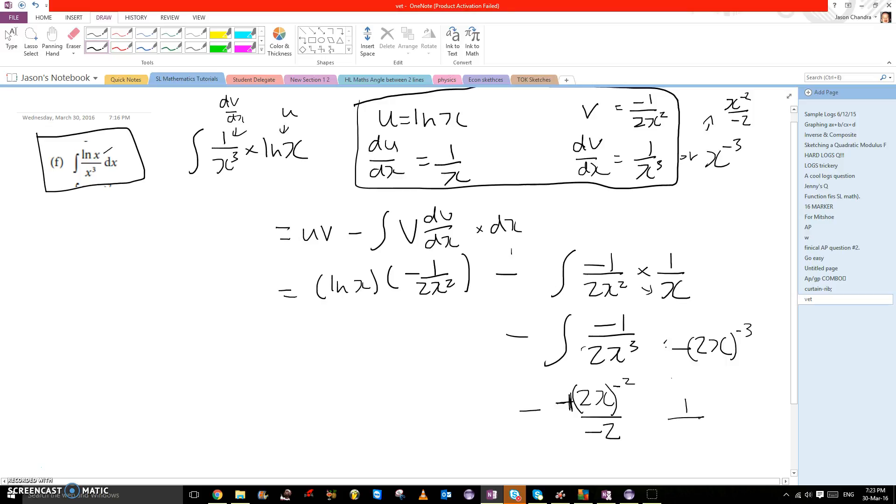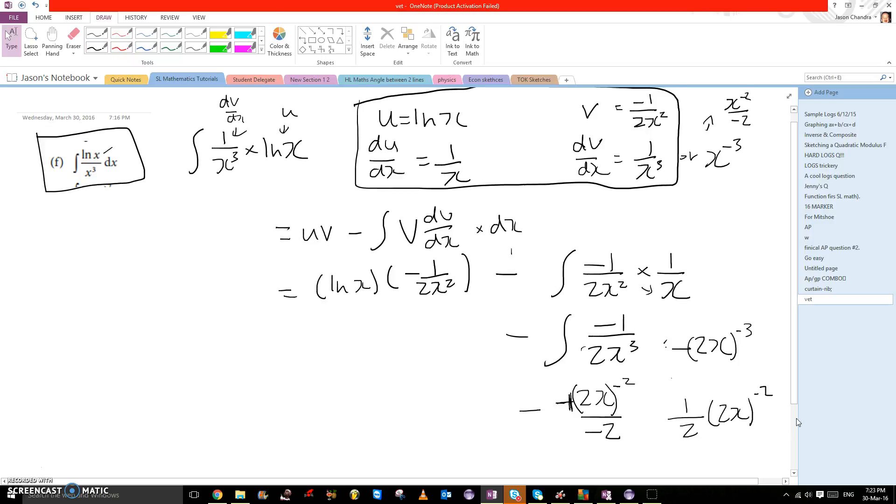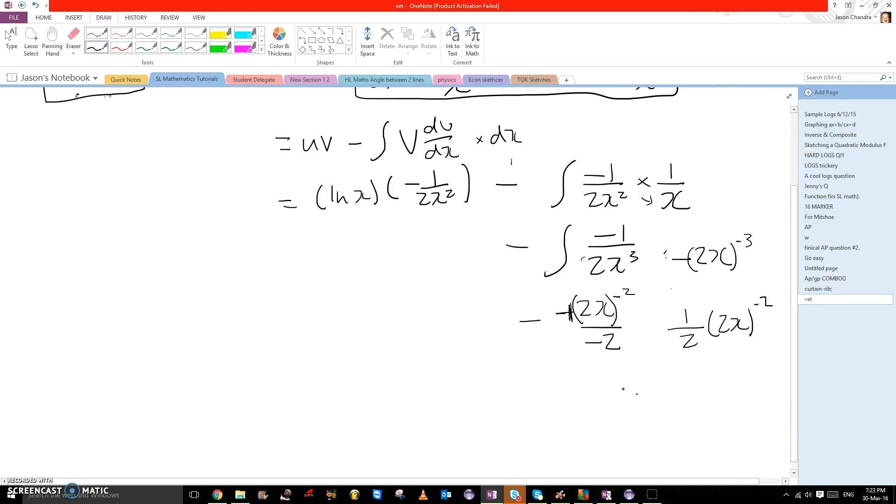1 over 2x to the power of negative 2. Sorry, this is a bit messy. This would finally give 1 over 4x to the power of negative 2. I don't think there should be a bracket here, so just ignore that.